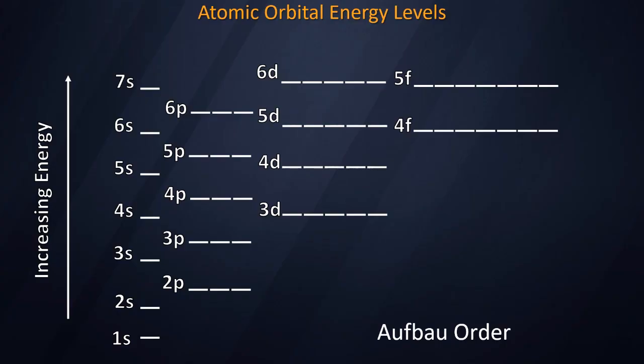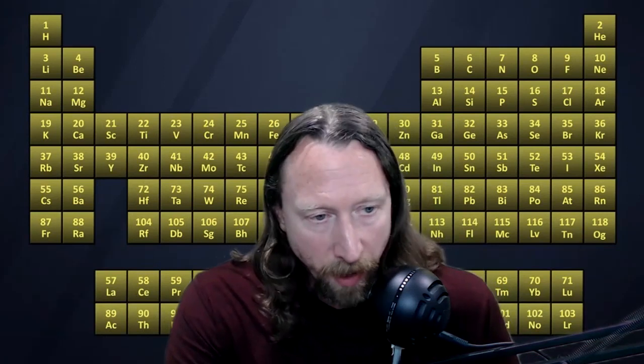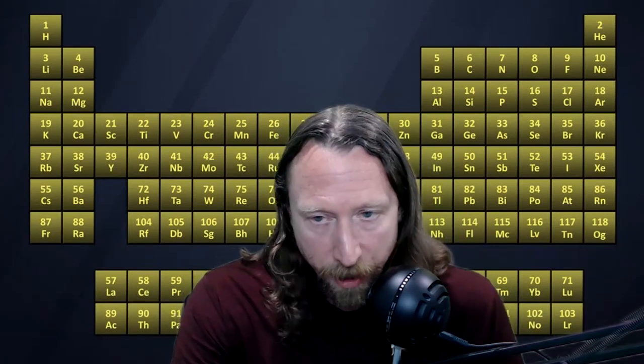To understand the Group 3 debate, we're going to have to go back and look at the energy levels of atomic orbitals. We typically see atomic orbital energy levels in a diagram like this in our chemistry textbooks, in which there are principal energy levels — the first, second, third, fourth, fifth, and so on — each of which is generally higher in energy. On closer examination, the subshells of each principal level don't necessarily trend in the same way.